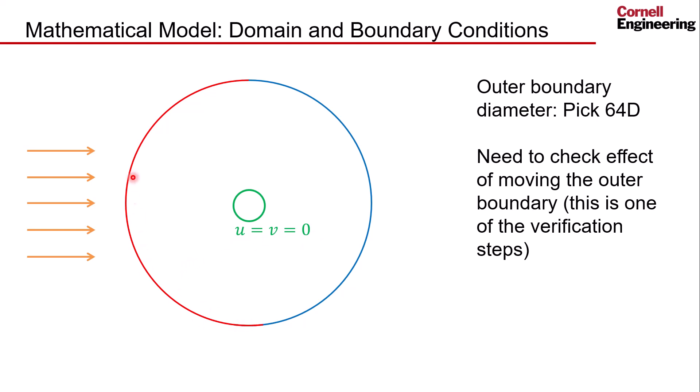We divide the outer boundary into two sections. The front section, shown in red here, we set a velocity boundary condition, so we'll set u equal to one and v equal to zero. For the backward part of that boundary, shown in blue, we'll use a pressure boundary condition because that's where the flow is going out of the domain, and we set the pressure to be one atmosphere.